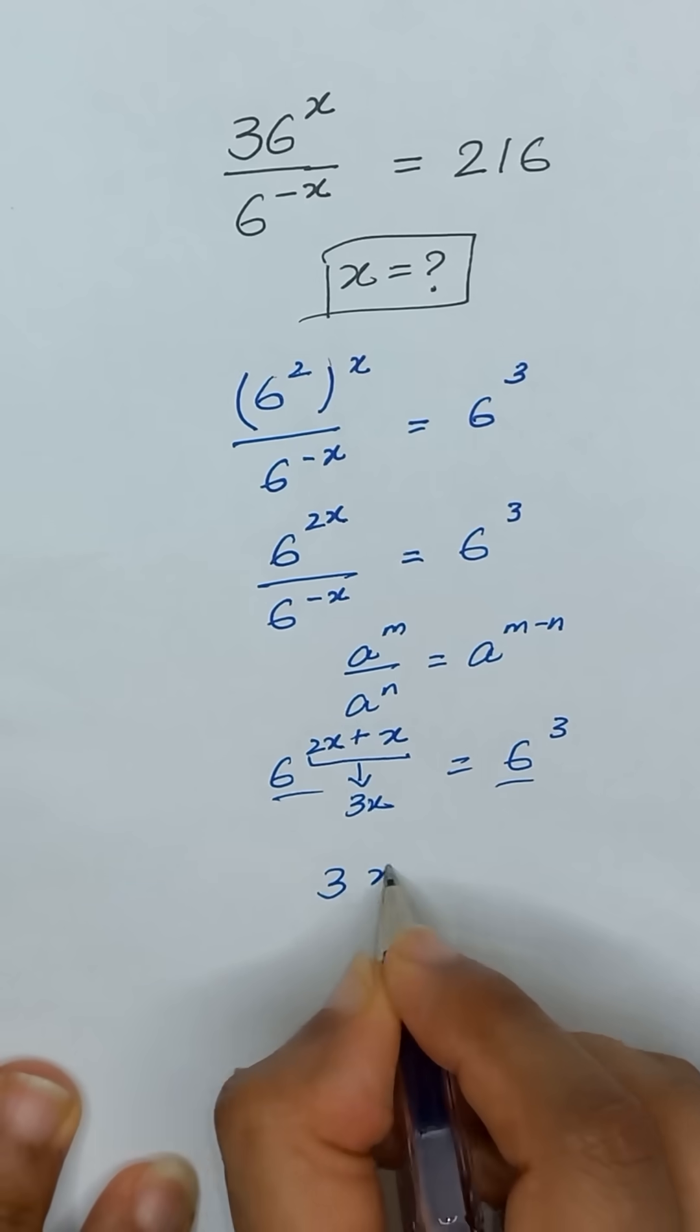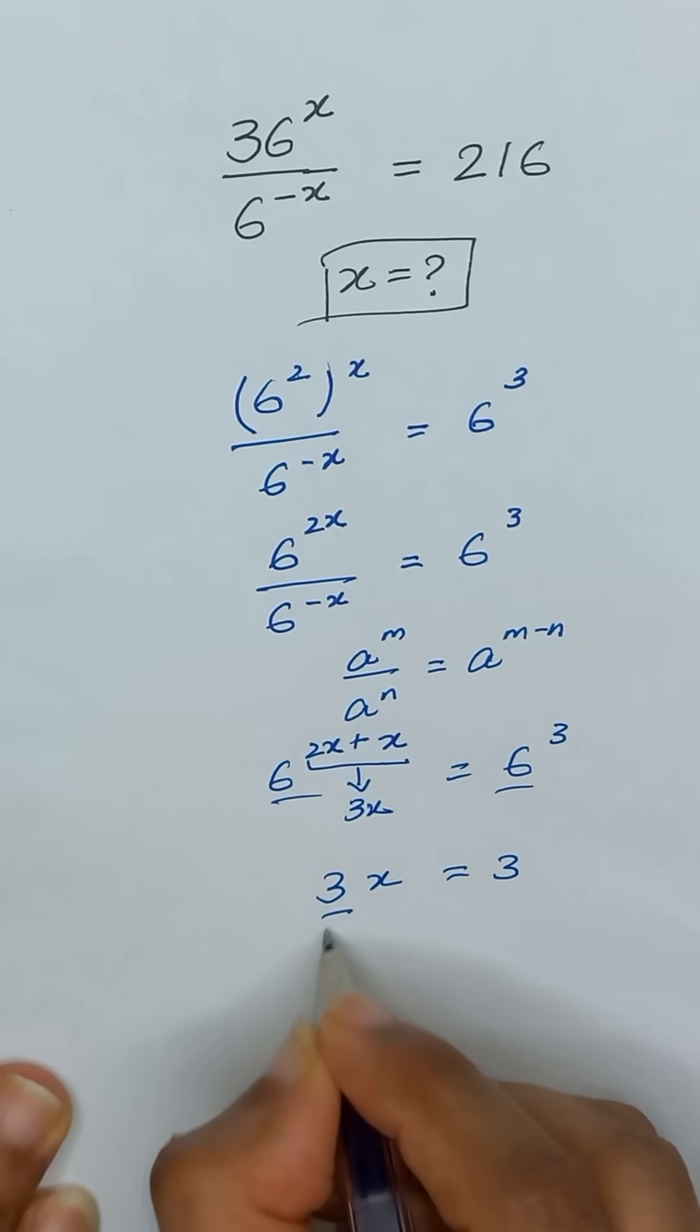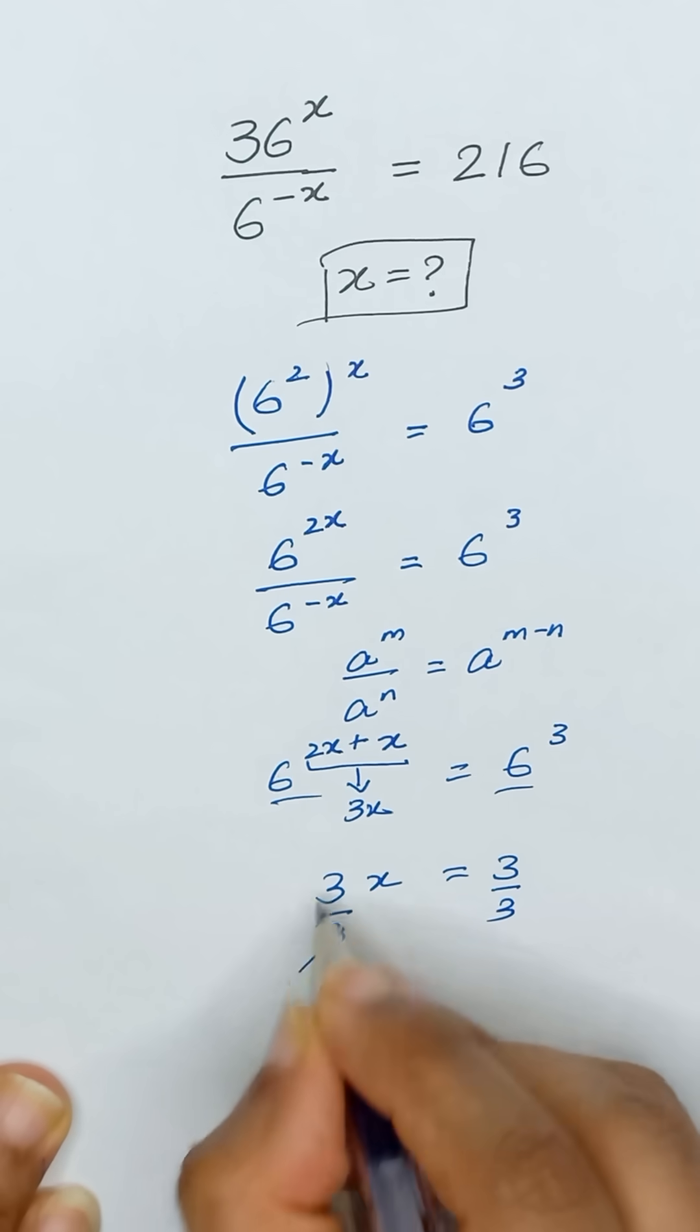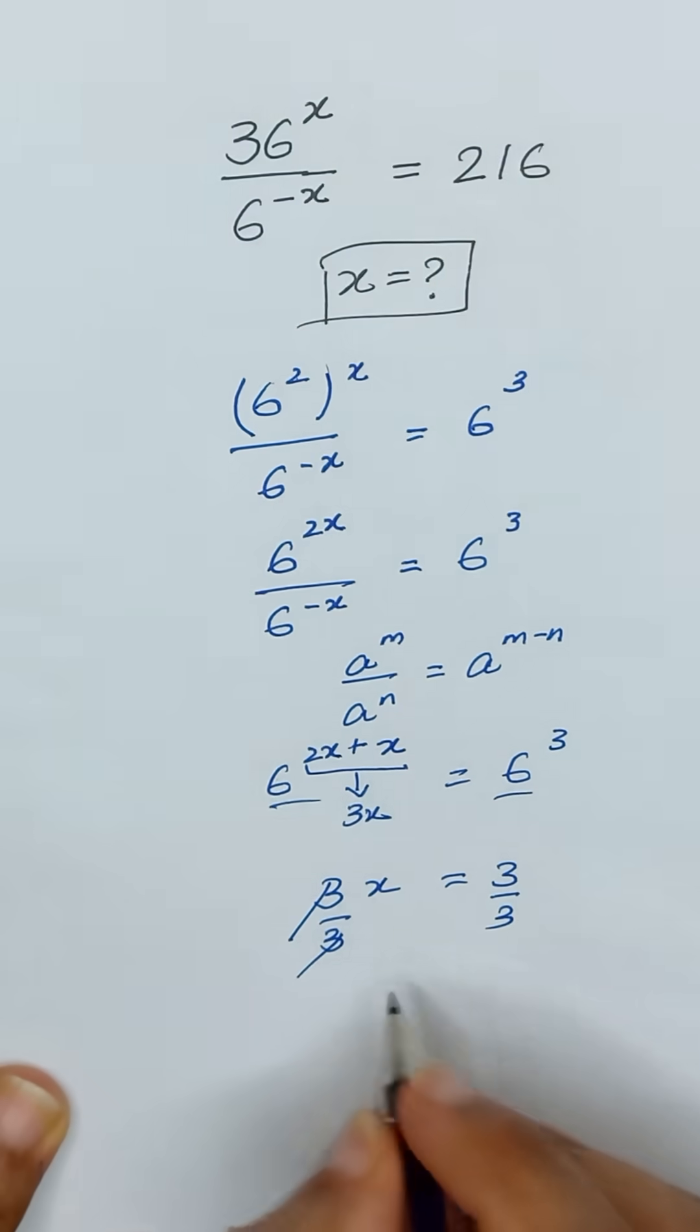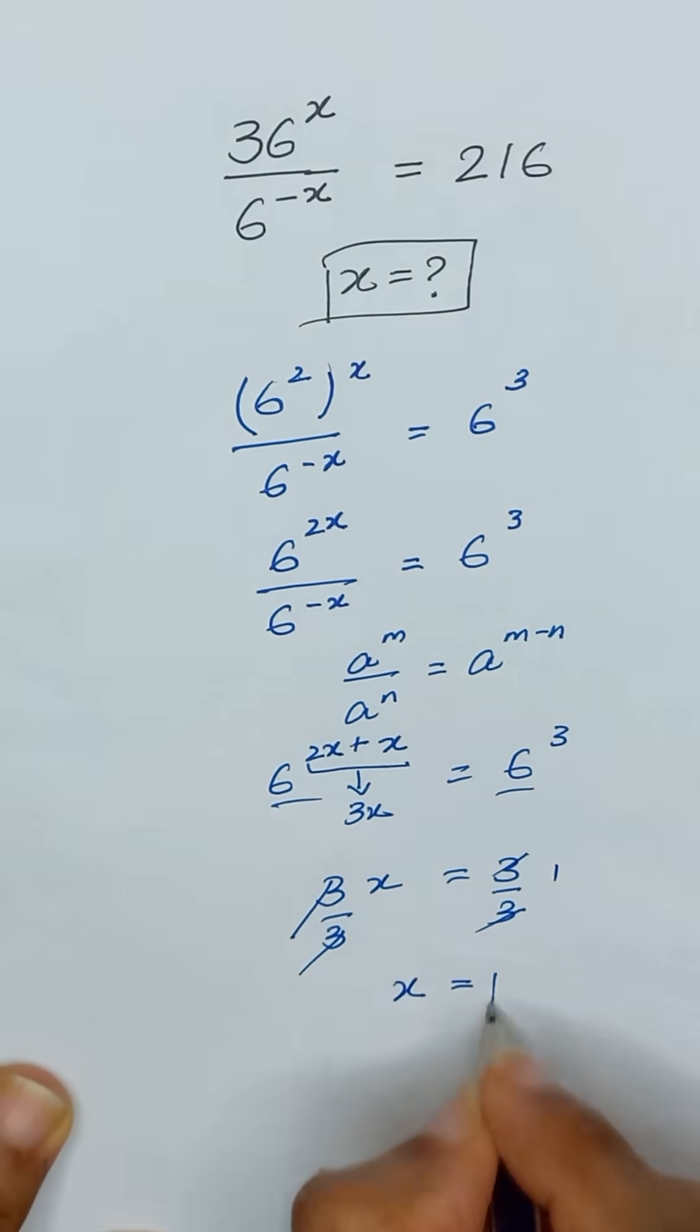So 3x will be equal to 3. Now dividing 3 on both sides to find the value of x, so this 3 and 3 will be cancelled out and x will be equal to 1.